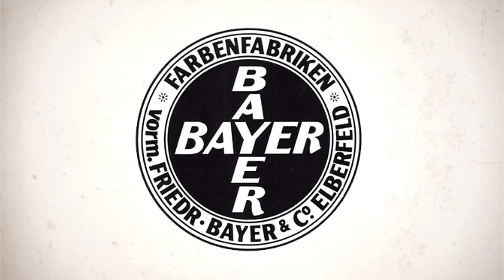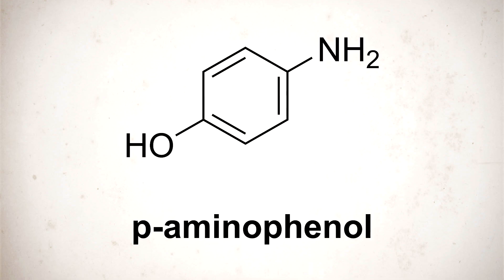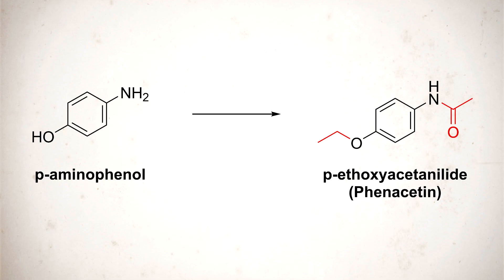About a year after acetanilide was discovered, another company started to sell a different aniline-based pain reliever. At the time, they were producing a lot of P-aminophenol waste as a by-product in dye production, and the chemists thought it might be possible to convert it to something useful. So they tacked on an acetyl group to the nitrogen and covered up the hydroxyl with an ethyl group. This gave the final molecule, paraethoxyacetanilide, which they called phenacetin.